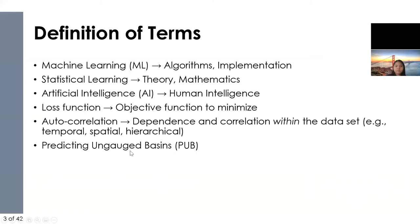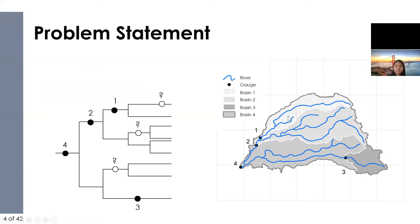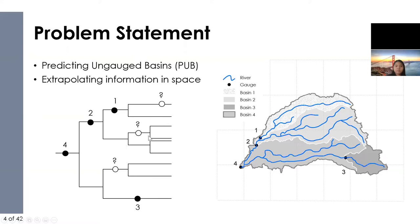So what do we mean by predicting ungaged basins? Let's say we have gauges on a river network — at locations one, two, three, and four, we have data. There are locations on the network where we don't have data, but we're interested in knowing flows there. Predicting ungaged basins is basically an extrapolation of information in space — taking data at known locations and finding data for unknown locations. This can be useful for managing watersheds, or when you need flows at those locations. When I say flows, I mean unimpaired flows.